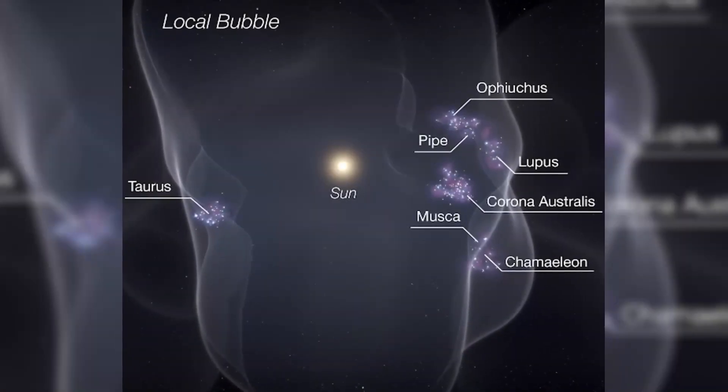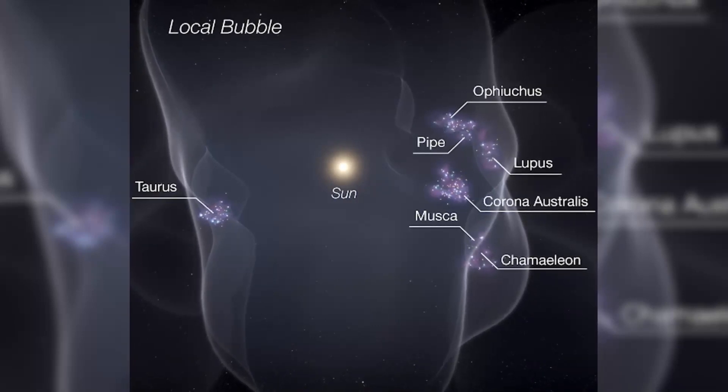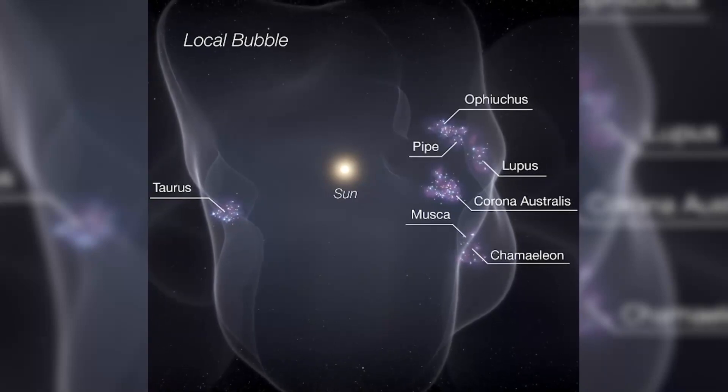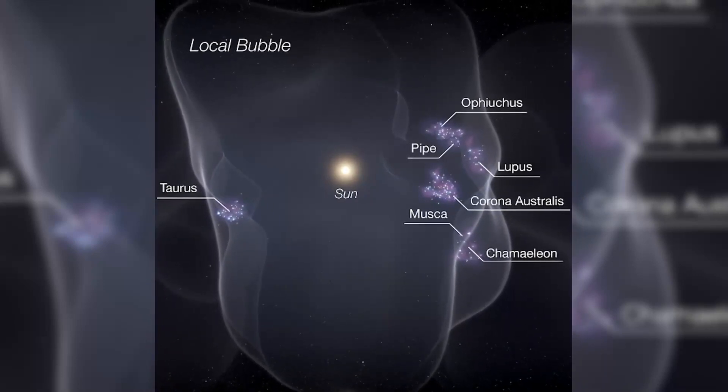About 10 million years ago, a cluster of supernovae created the local bubble, a 300-light-year-long, peanut-shaped bubble of gas in the interstellar medium that surrounds our solar system.